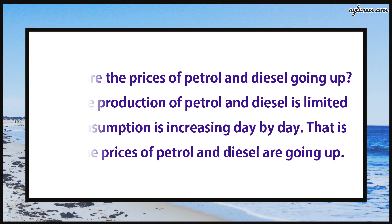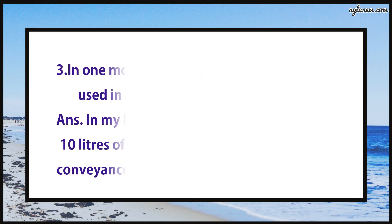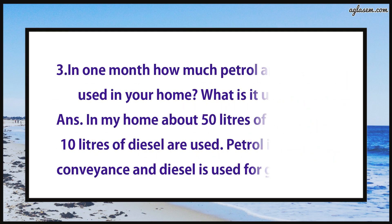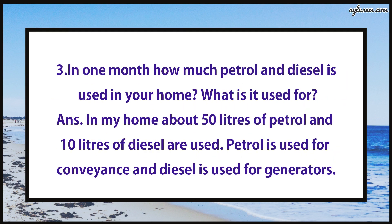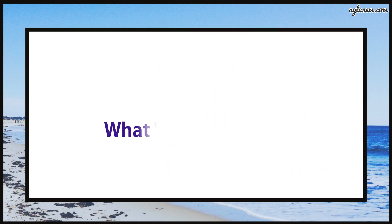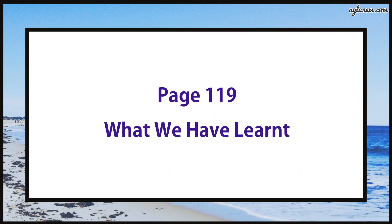Question number three says: In one month, how much petrol and diesel is used in your home and what is it used for? Answer: In my home, about 50 litres of petrol and 10 litres of diesel are used. Petrol is used for the vehicle and diesel is used for the generator.